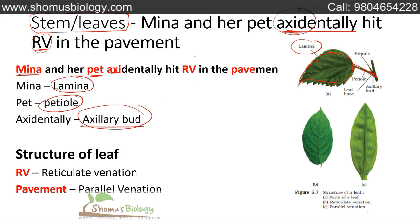RV in the sentence stands for reticulate venation — where you have a main straight vein and other veins branching out from it. 'Pavement' gives you parallel venation: P for parallel, V for venation. In parallel venation there is one straight line and all other veins run parallel to it. So from this one sentence you understand lamina, petiole, axillary bud, reticulate venation, and parallel venation.